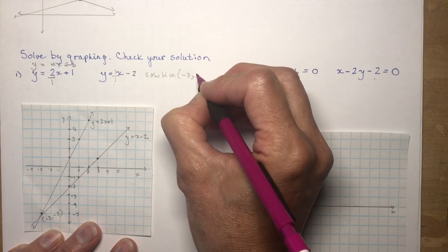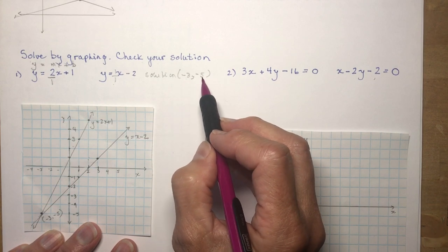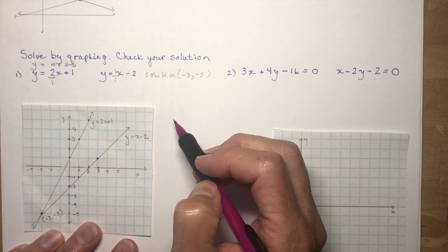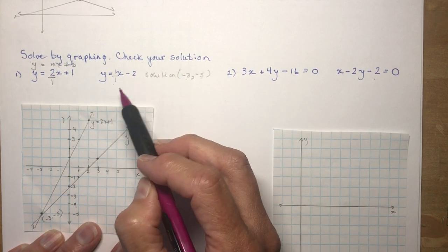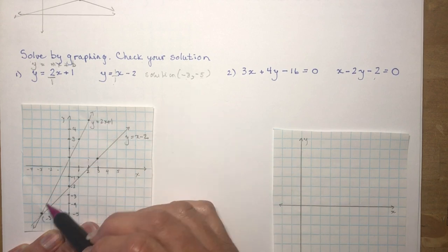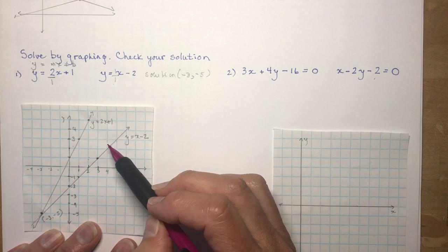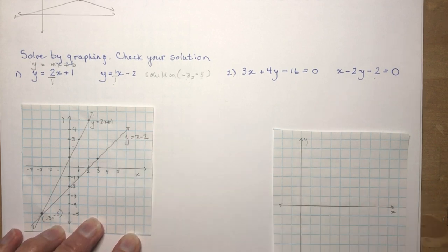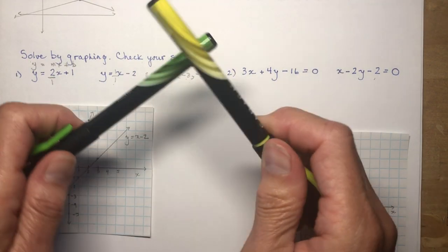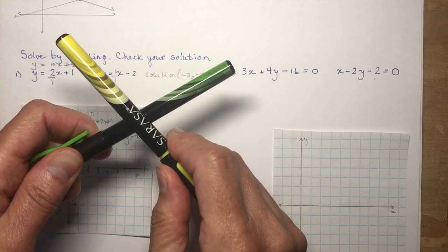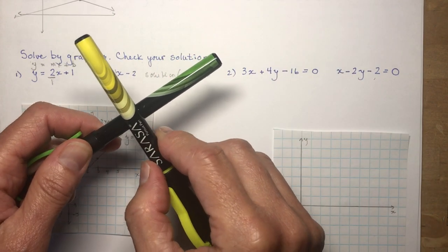To check it, I'm going to substitute −3 and −5 into each of these equations to make sure that this point satisfies the equations. By satisfying, I mean this point is on both lines. So if you have two lines, there's only one place they can intersect — lines don't wiggle back and around. So if you get more than one solution, something's really wrong.